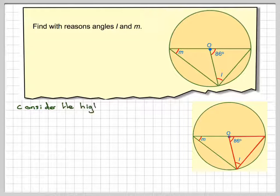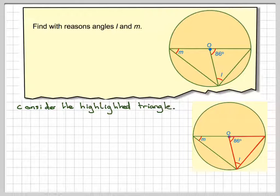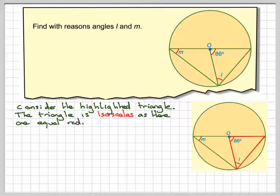So if we consider the highlighted triangle, the triangle is isosceles because this length and this length are the same because they're equal radii of the circle. Radii is plural for radius.